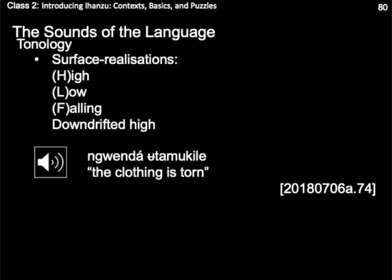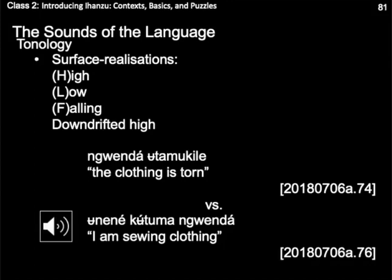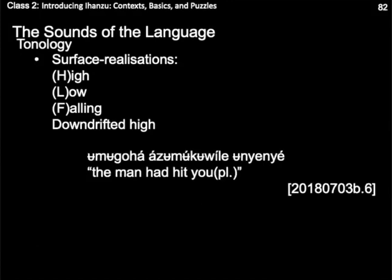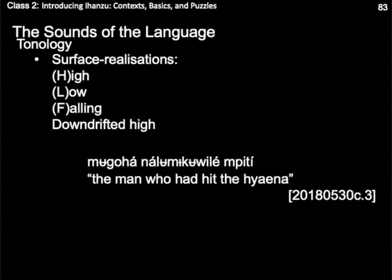In addition to high and low tone, other surface realizations are possible. Words ending in a high tone when phrase-internal are realized as high, as in the example nguenda otamokide, 'the clothing is torn'. However, when words ending in a high tone are phrase-final, that high tone is realized as falling. High tones in Ihanzu may also be realized as down-drifted high — that is, following the first high tone of a phrase, all following high tones are realized as slightly lower. As such, all the following high tones in a phrase would be realized as progressively lower than the previous high tone, but still interpreted as high. Note, however, that in an example like this one, the second tone would be realized as just as high as the first, because it exists inside a relative clause and down-drift seems to be reset by the relative clause boundary. That is to say, tonal phenomena interact with syntactic structure in a real and measurable way.